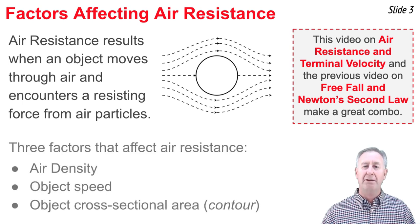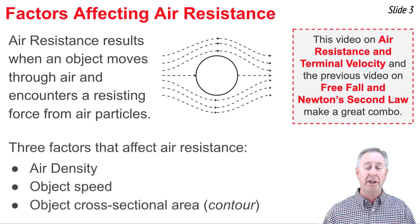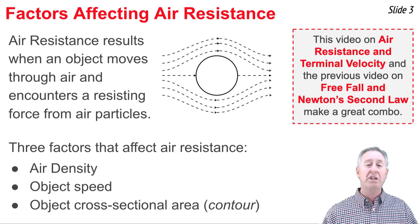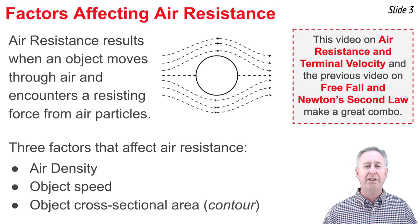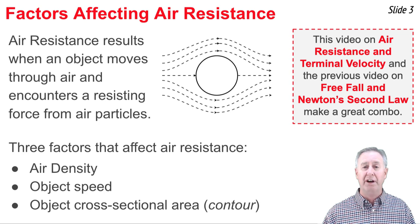There are three variables that affect the amount of air resistance that act upon the object. One of them is the density of air. The other one is the object speed. And the third one's a little bit more complicated, and for lack of any better term at this point, we'll just refer to it as a cross-sectional area, a shape-related variable.